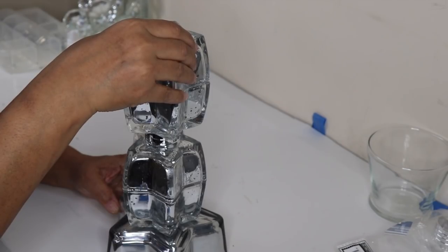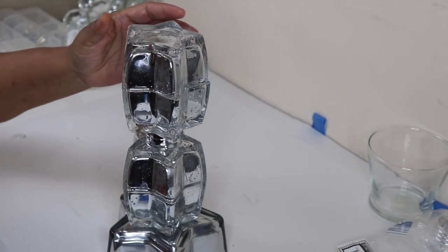Now just repeat the same steps, add another tea light holder on top of the bottom tea light holder.